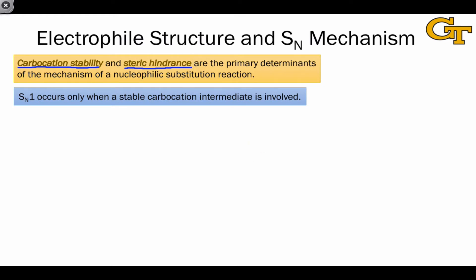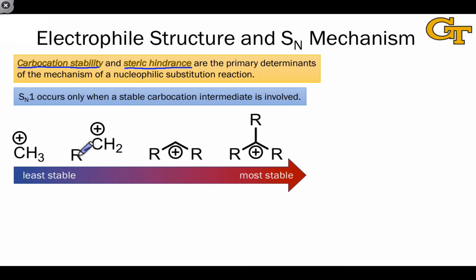The SN1 reaction occurs only when a stable carbocation intermediate is involved. Previously, we discussed how, via an inductive effect, the number of alkyl groups linked to a carbocation, or the substitution pattern, determines the stability. More alkyl groups makes a more stable carbocation.